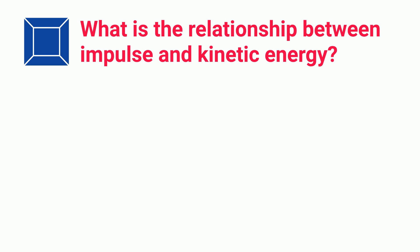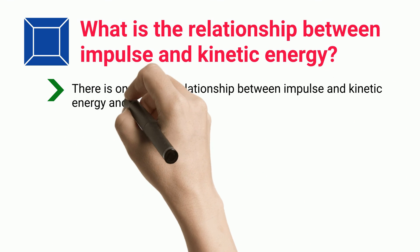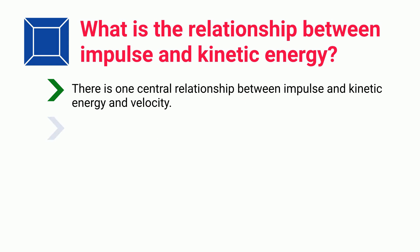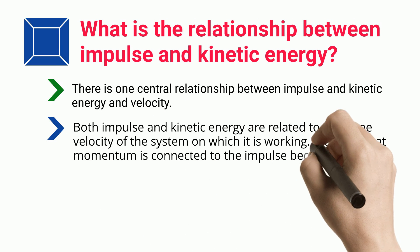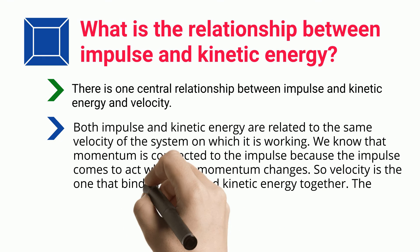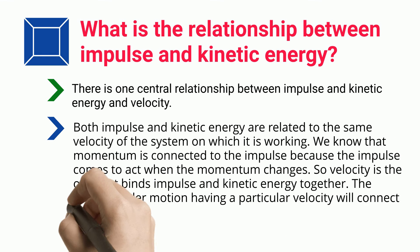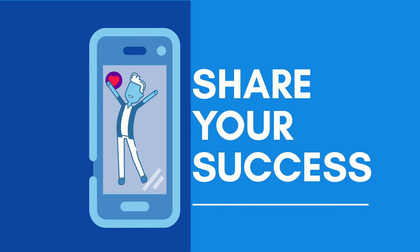What is the relationship between impulse and kinetic energy? There is one central relationship between impulse, kinetic energy, and velocity. Both impulse and kinetic energy are related to the same velocity of the system on which they are working. We know that momentum is connected to the impulse because the impulse comes to act when the momentum changes. So velocity is the one that binds impulse and kinetic energy together. The system under motion having a particular velocity will connect both the impulse and the kinetic energy.